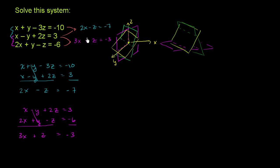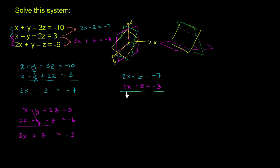This is a more traditional problem. We have 2x - z = -7 and 3x + z = -3. The way this is set up, if we just add these two equations the z's cancel out. On the left: 2x + 3x is 5x, and -z + z cancels. On the right: -7 + (-3) = -10. So 5x = -10. Dividing both sides by 5, we get x = -2.